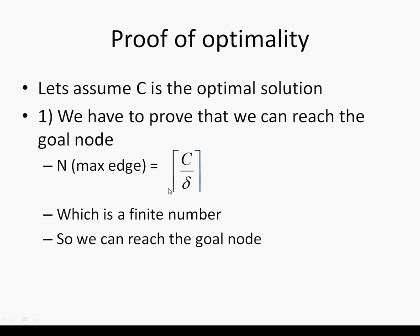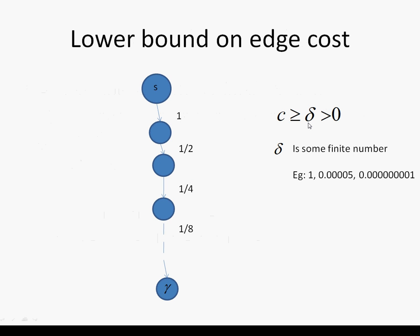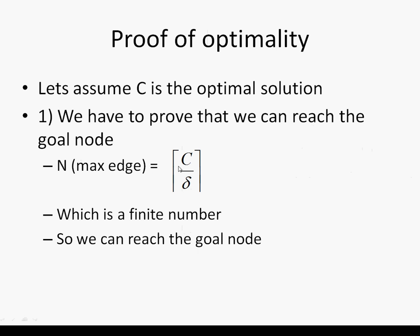The maximum value of n will be the ceiling of C* divided by delta, where delta is the lower bound on edge cost — that is, the minimum cost an edge can have. Since C* is finite and delta is finite, the ceiling of C* / delta is also finite. This means there are a finite number of edges, so we can always reach the goal node when starting from the source node.